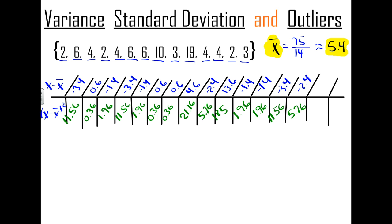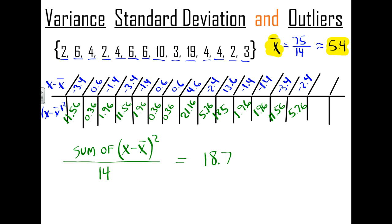We filled in the whole table, and all the green numbers are the squared differences from the mean. What we're going to do now is essentially find the average of all the green values: add them all together and divide by 14. That gives us 18.7, and that is the variance, denoted by the symbol sigma squared. So σ² = 18.7.